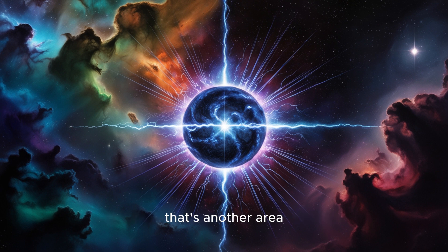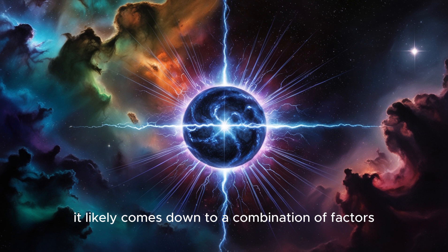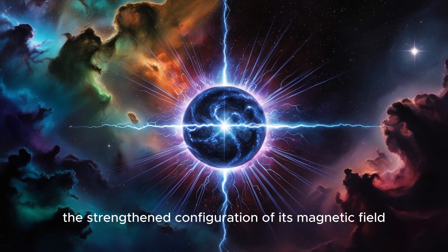What about the different types of neutron stars? Why do some become pulsars, others become magnetars, and some seem to stay relatively quiet?